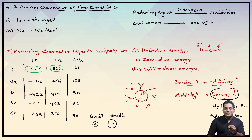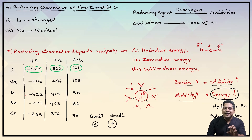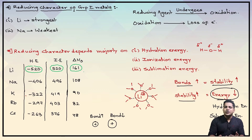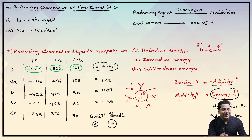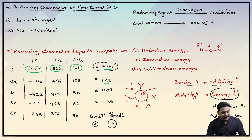So what we can do is add up all three values along with their signs and then check the final answer. Over here, if we add all the values along with their signs: lithium comes out to be plus 161, sodium comes out to be plus 198, potassium is plus 187, rubidium comes out to be plus 188, and finally cesium is plus 191.